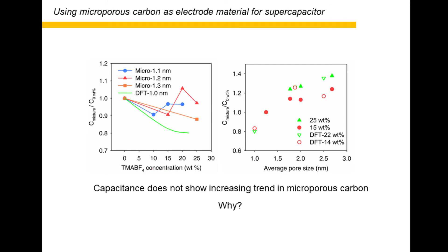We used three mesopore-rich carbons with different pore size distributions. The capacitance increases consistently with the adding of TMA-BF4 into the EMIM-BF4. By taking the cation-cation interaction into consideration, the capacitance improvements estimated by simulation also match well with our experimental results. However, when the electrode material changes from mesopore-rich carbon to micropore-rich carbon, both experiments and simulation unexpectedly suggest that the capacitance does not enhance after the adding of TMA ions. If we plot the capacitance enhancement as a function of pore size, we find that the more mesopores, the higher the capacitance improvement observed by adding TMA ions. This means adding TMA can only enhance the capacitance of mesopores.